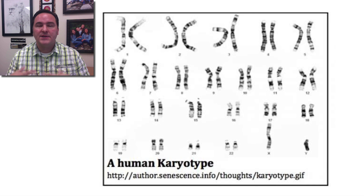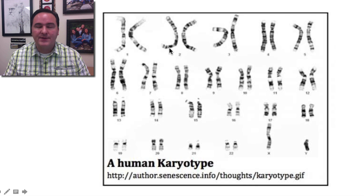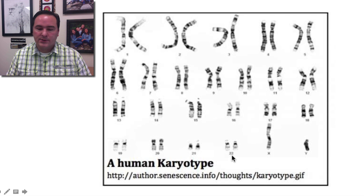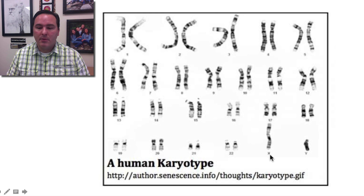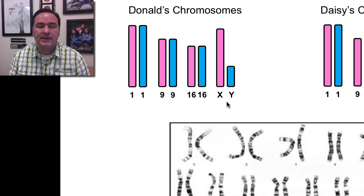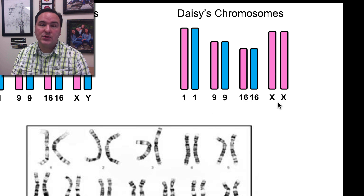The genes found on both homologous pairs of chromosomes are found in the same place and in the same order. The chromosomes get gradually smaller as you work your way down — chromosome pair 22 is very small. This represents a male because there's an X and a Y, and notice the Y is about a third the size of the X chromosome. We're only going to look at four pairs: chromosomes 1, 9, 16, and the sex chromosomes. Donald has 1, 9, 16, X and Y, and Daisy has 1, 9, 16, and two X's because she's female.